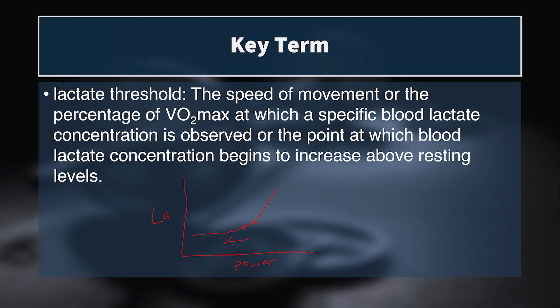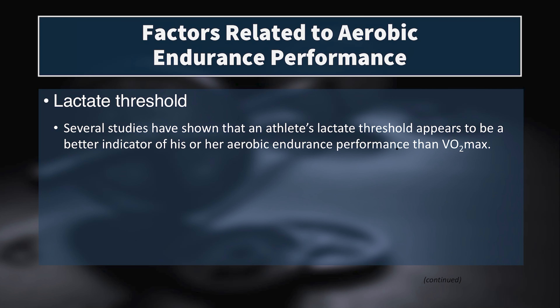It's the speed at which you can sustain maximal lactate steady state that is a better indicator of endurance performance than VO2 max. At the highest levels, everyone has a high VO2 max—in the 70s or 80s for men, or 60s and 70s for women. What separates them is who can utilize the highest percentage of their VO2 max without accumulating too much lactate. Several studies confirm that lactate threshold is a better predictor of aerobic endurance performance.